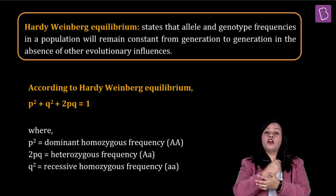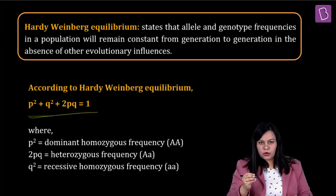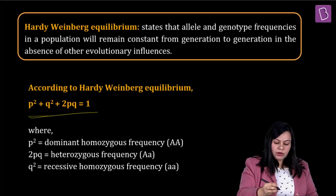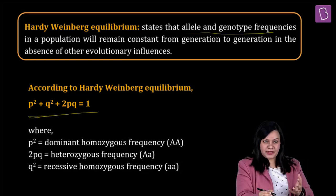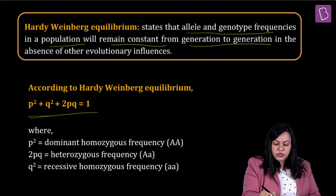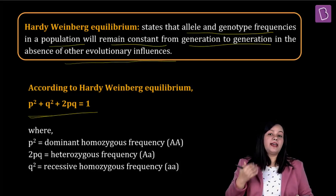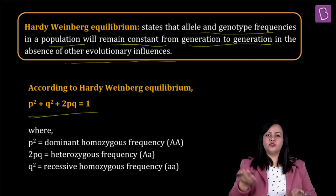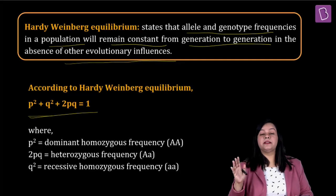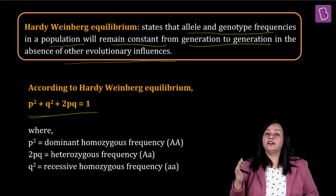It is represented by an equation: p² + q² + 2pq = 1. This equilibrium states that allele and genotype frequencies in a population will remain constant from generation to generation, but only in the absence of other evolutionary influences. If there is a case of mutation or frequent genetic recombinations happening, then this equilibrium is going to get completely disturbed.